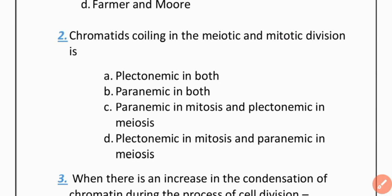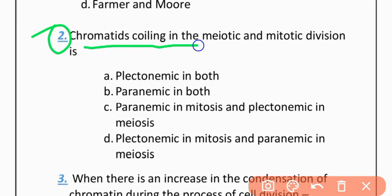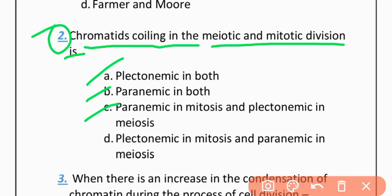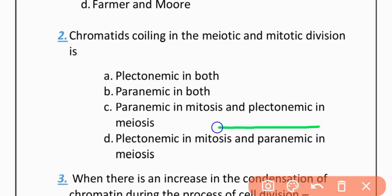MCQ 2: Chromatid coiling in mitosis and meiotic division is — Option A: Plectonemic in both. Option B: Paranemic in both. Option C: Paranemic in mitosis and Plectonemic in meiosis. Option D: Plectonemic in mitosis and Paranemic in meiosis. The correct option is D.